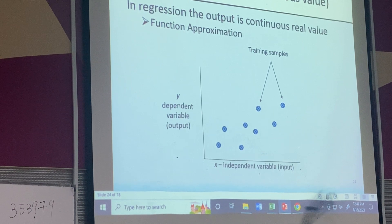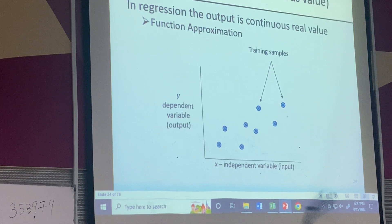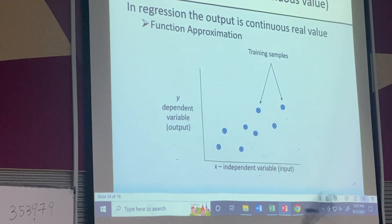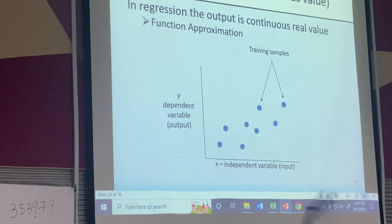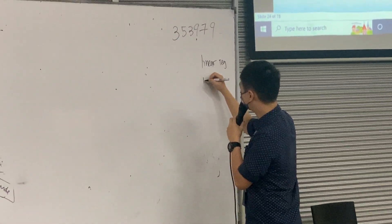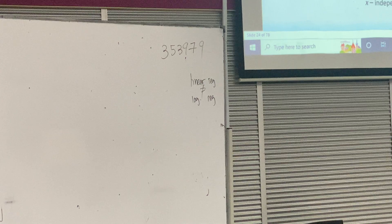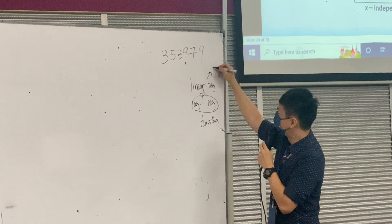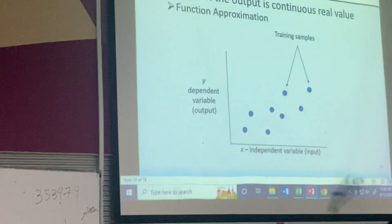Linear regression is mainly for continuous values. You may see two similar names: linear regression and logistic regression — don't get confused. Linear regression is for continuous values; logistic regression is for classification. Linear regression builds a model to predict continuous values, which you already learned in secondary school.